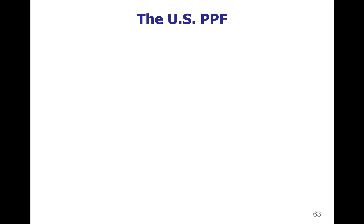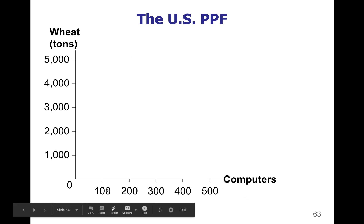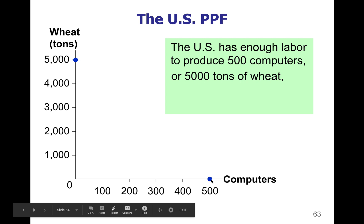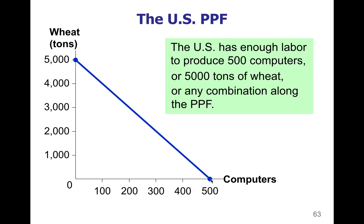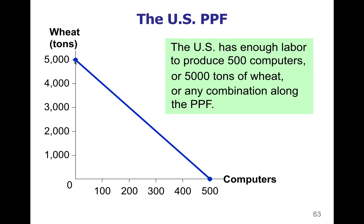If you've done your production possibility frontier correctly, it should look something like this. You should have the title 'US PPF' or 'United States' at the top, and both axes labeled — wheat on the vertical, computers on the horizontal. Using all resources for wheat gives 5,000 tons of wheat; all resources for computers gives 500 computers. The line between them represents all possible combinations. You don't need all the intermediate numbers — just the maximum values and any dots you've plotted on your graph.